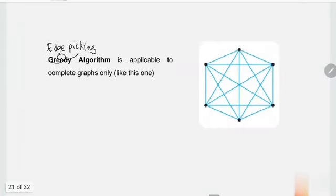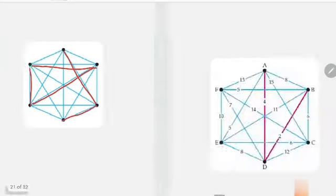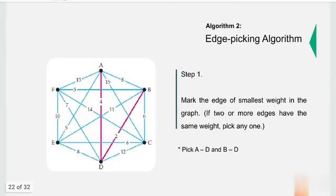But in Edge Picking Algorithm, we can actually choose all of the smallest edges. Let me bring you to the process. I think we have the same given. We can mark A and D, and also B and D right away because they have the two smallest weights. Obviously, you want the smallest sum, so you choose the edges with the smallest weights.